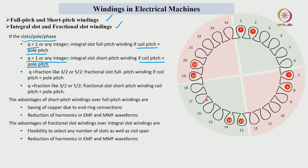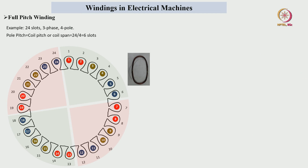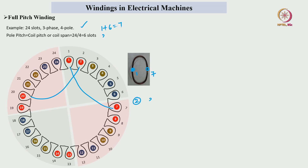For the 24-slot stator core, full pitch winding means 1 + 6 = 7 and 2 − 6 = −4, + 24 = 20. After making the coil, one side is placed in slot number 1 and the other side in slot number 7. Similarly, the second coil side is placed in slot 2 and the other coil side in slot 20.